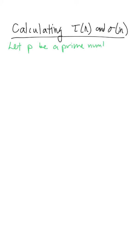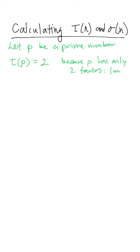Tau of p is equal to 2 because p has only two factors: one and itself, p. Sigma of p is going to be 1 plus p, because those are the two factors, one and p. Sigma means the sum — you could also write p plus 1.